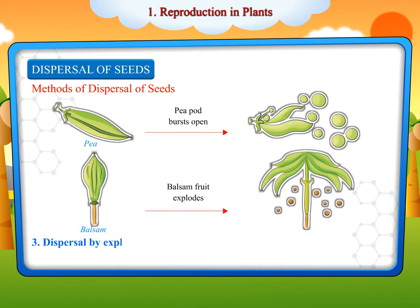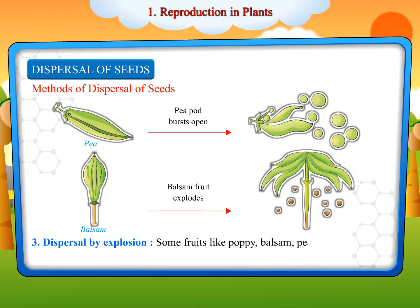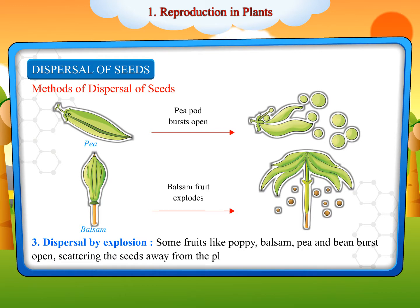Dispersal by Explosion: Some fruits like poppy, balsam, pea and bean burst open, scattering the seeds away from the plant.